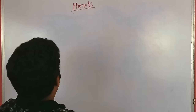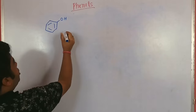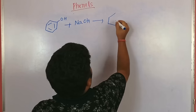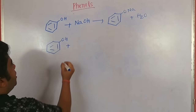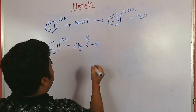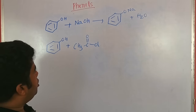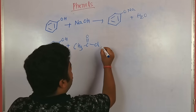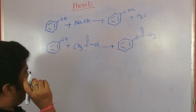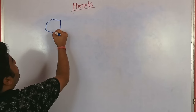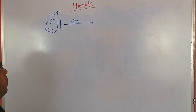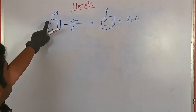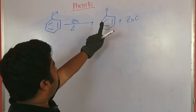Some acid-base reactions of phenol: phenol reacted with NaOH gives sodium phenoxide plus water. When reacted with acetyl chloride (as in ester formation seen with alcohols), it gives the phenyl ester. If phenol is reacted with zinc, we see reduction of phenol to benzene.